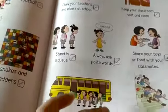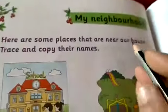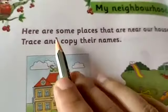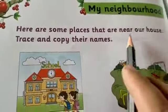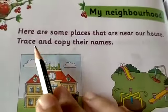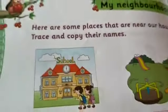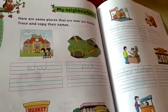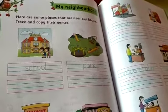Children, read these good manners, make a video, and send on my WhatsApp number. Third and last topic is my neighborhood. Here are some places that are near our house — trace and copy their names. Here some images are given which you can find near your house.